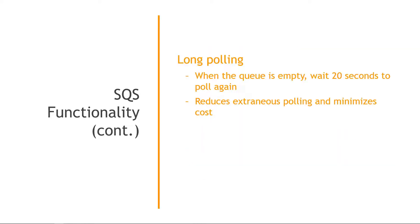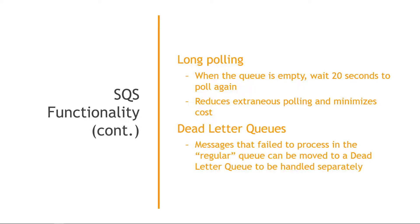Long polling means that if the queue is empty, the system waits 20 seconds before polling again rather than polling constantly — this reduces extraneous polling and minimizes costs. Finally, dead letter queues are used for messages that fail to process in a regular queue. You move these failed messages to a dead letter queue to handle them separately.